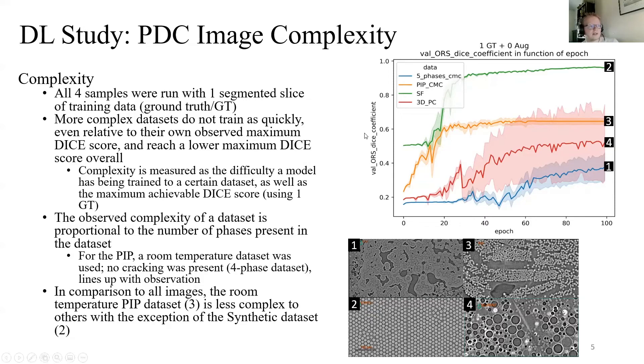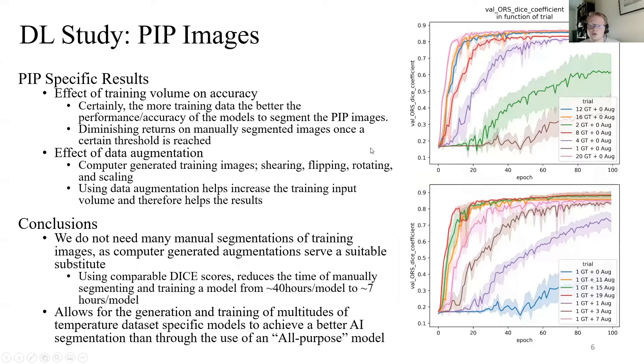As we are working with the PIP dataset, we continue to do some more investigation into how to save time in training the models for PIP-specific imagery. Obviously, the more training volume you have, the better the trained model will perform. However, there is a distinct diminished rate of return for the more training volume you provide. Between the bottom one ground truth curve and the two ground truth curve, which is the next one up, there's a 20-point increase of dice score by providing just one more image of ground truth, but only a one-point increase in the dice scores between the 12 ground truth and 20 ground truth curves.